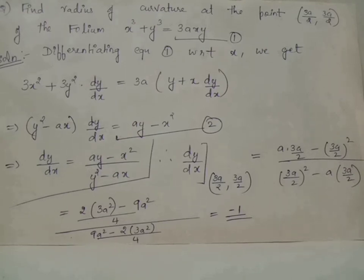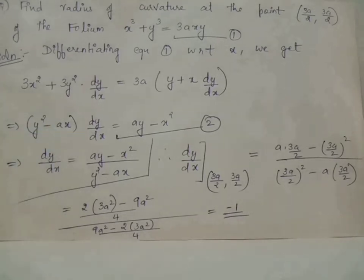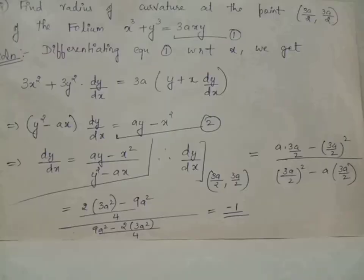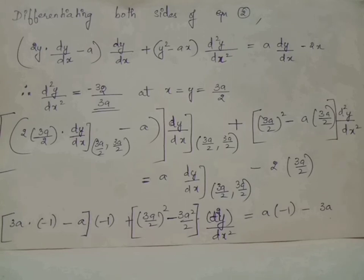To evaluate the radius of curvature, we need y''. We differentiate both sides of equation 2 again with respect to x, applying the product rule on the LHS. This gives (2y·dy/dx − a)·(dy/dx) + (y² − ax)·(d²y/dx²) = a·(dy/dx) − 2x.